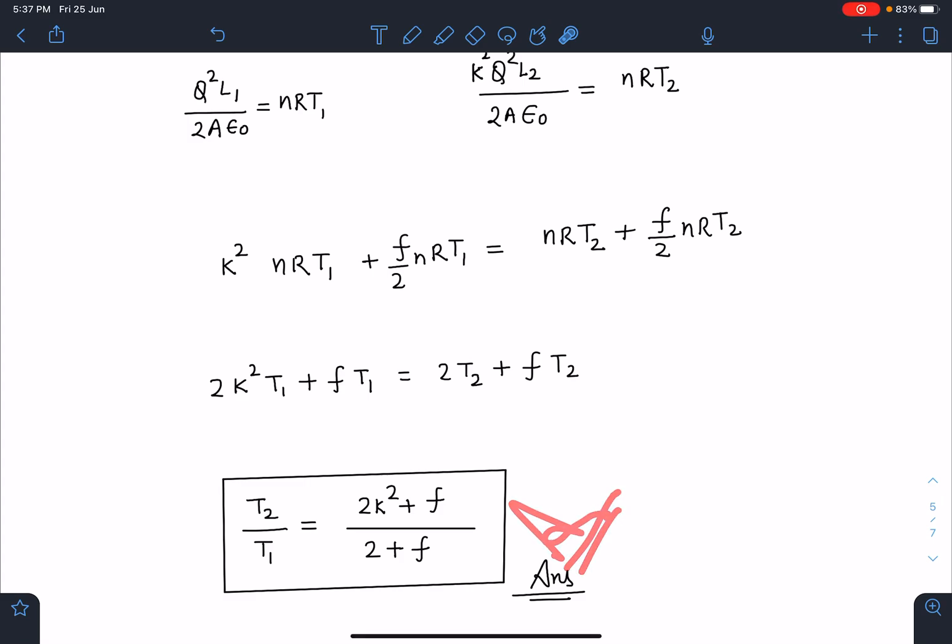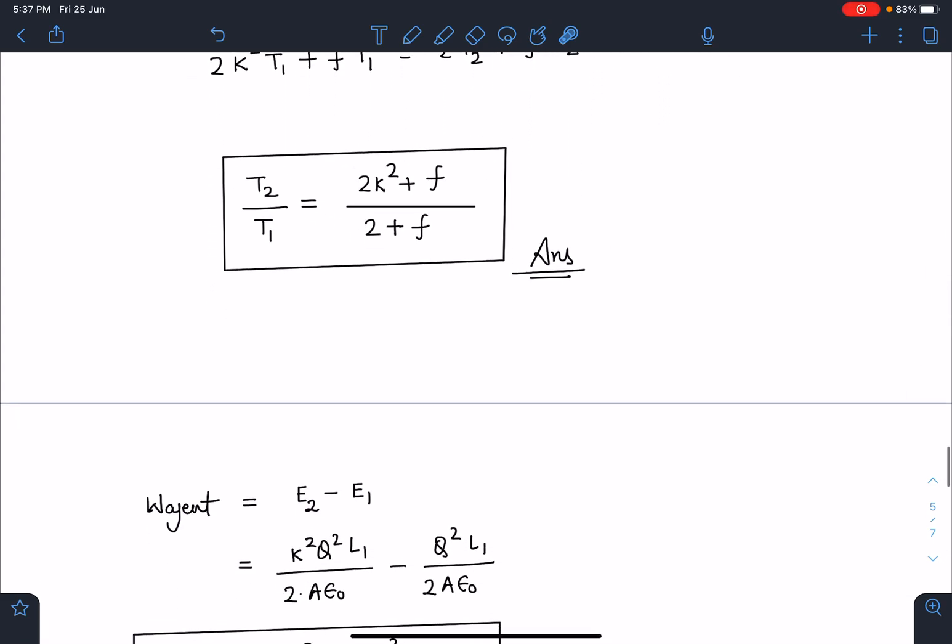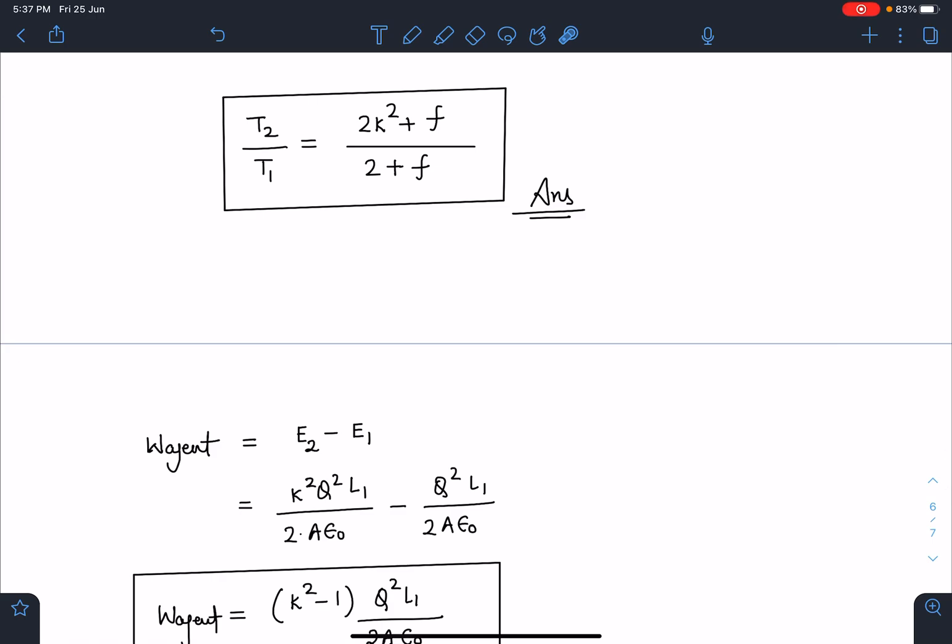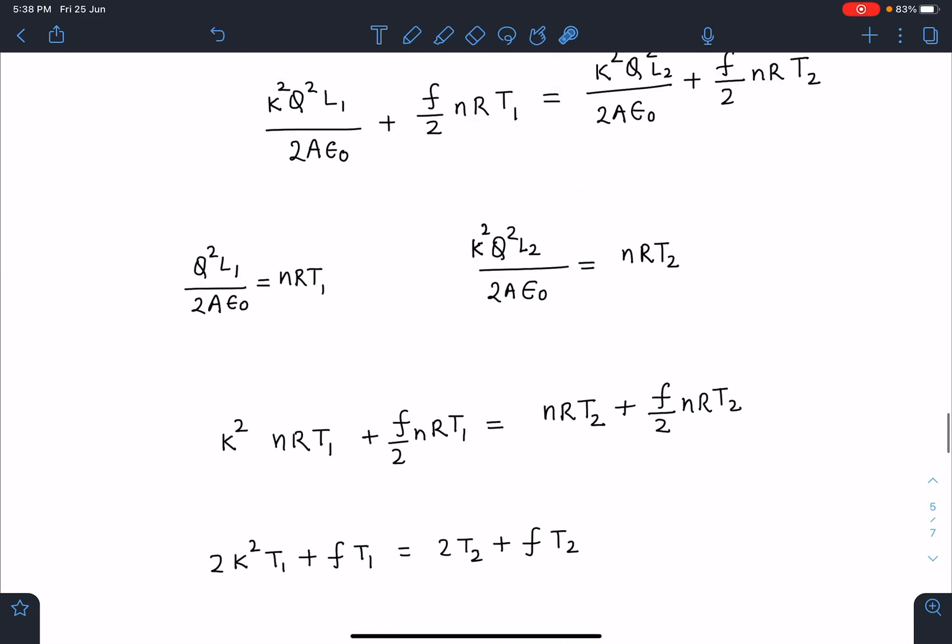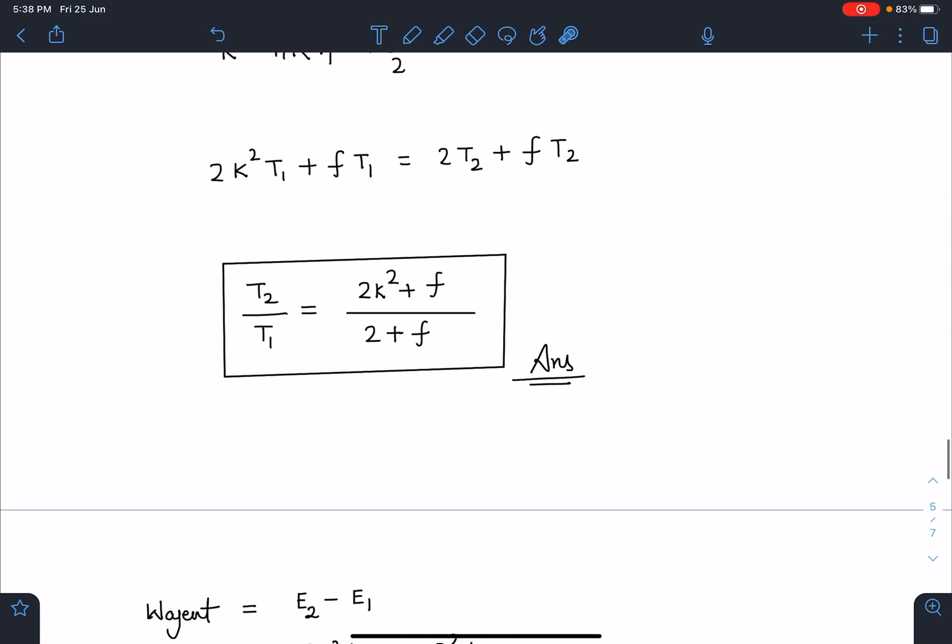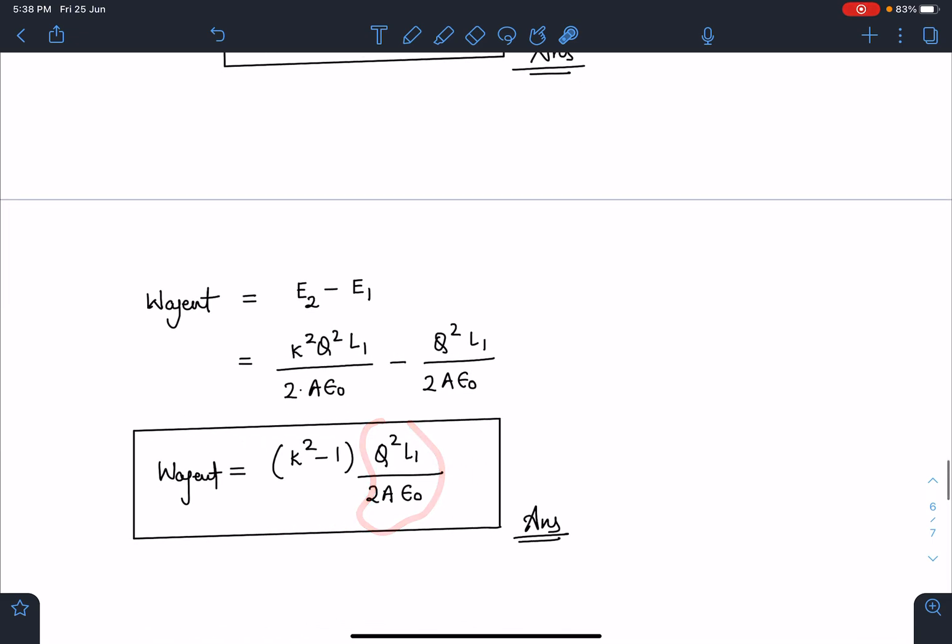And W agent is actually the energy difference between Stage 1 and 2, so E2 minus E1 directly I can write and you can see here this is nothing but electrical potential energy only. We have to take internal energy will be same between Stage 1 and Stage 2 and this value Q squared L1 by 2 epsilon 0 we have seen here it is NRT1 so I can write this W agent as: